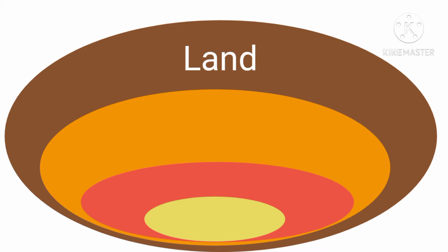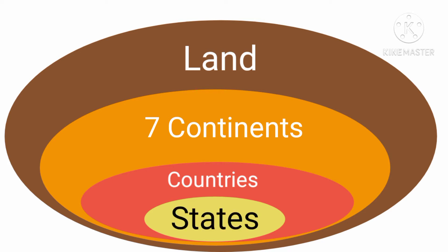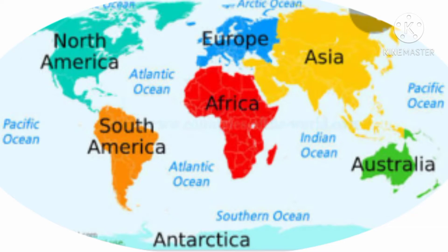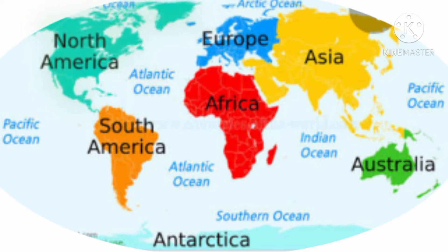The land of our earth is divided into seven continents. This is the image of our earth where you can see the earth is divided into seven continents, shown by different colors. Now we will study about North America, which is shown in the green blinking area.